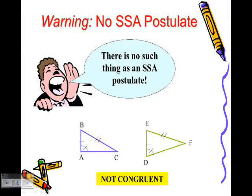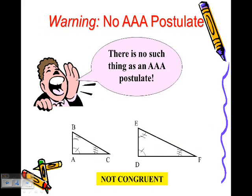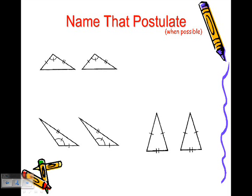Warning: there is no such thing as an SSA postulate. If that angle is not included between the two sides and you say that it's SAS, you are wrong. SSA does not work. Those triangles would not be congruent necessarily. Nor is AAA valid. We cannot prove triangles are congruent by comparing three angles of one triangle to three angles of another triangle.